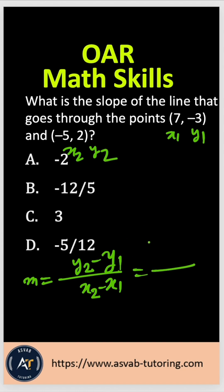So Y2 is 2 minus and then Y1 gives you negative 3. So that gives you negative 3 here and then X2 is negative 5 minus X1 is 7, right? So let me write that down here.